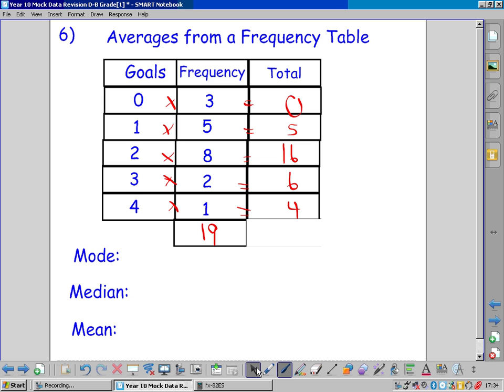But we need to find the total of all the totals. I call it the total total, this one here. So the total number of goals is all of these added up. 15 and 6 and 6 and 4 make 31. So the mean is the total total, 31, divided by how many games there are.